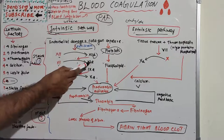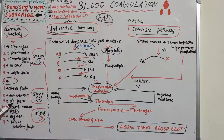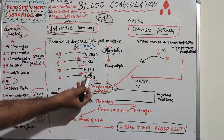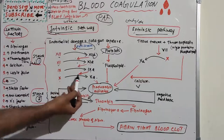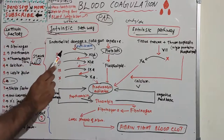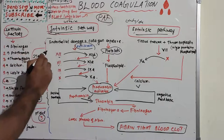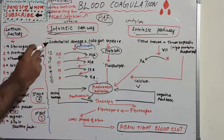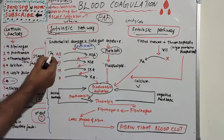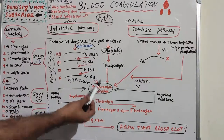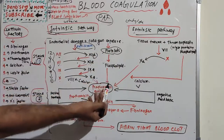The 11th factor — plasma thromboplastin antecedent — in turn activates the 9th factor — Christmas factor. The 9th activated factor then activates the 10th factor — Stuart-Prower factor. The sequence is 12, 11, 9, and 10 — not in simple decreasing order, as it goes 12, 11, 9, and then 10. Thereby the prothrombin activator forms via platelets and phospholipids.